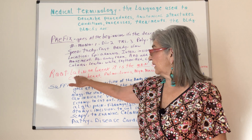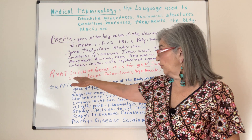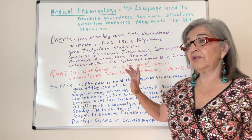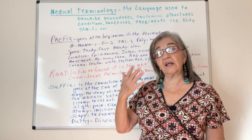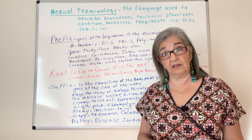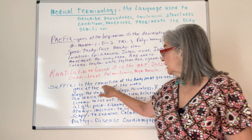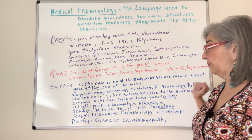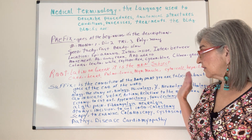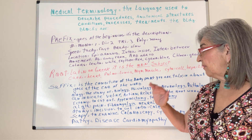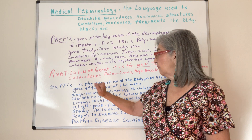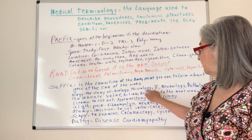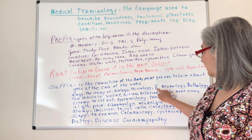So to recap: the root word is the main subject, and then you have your suffix, which usually goes at the end of the word. The suffix describes the condition of the part you are talking about. For example, 'ology' means the study of — like biology, physiology, psychology.